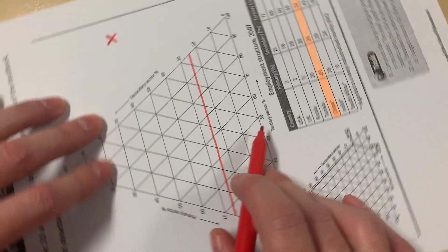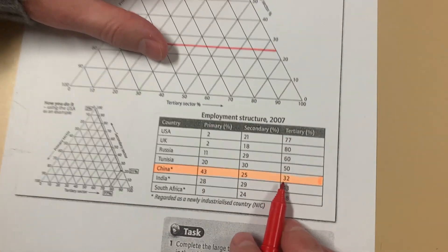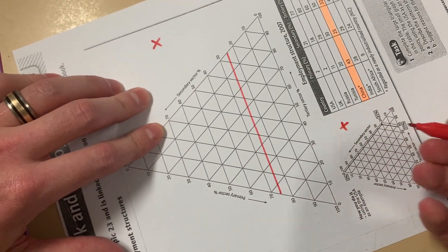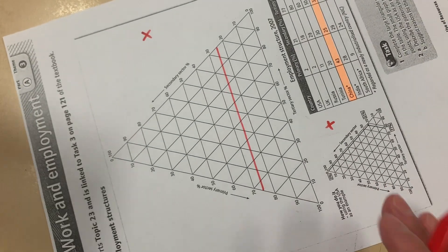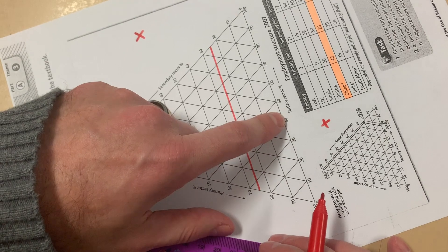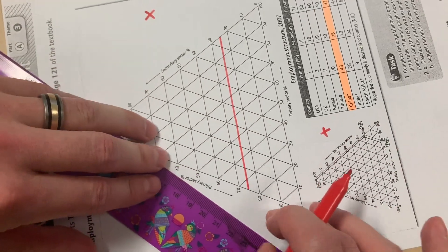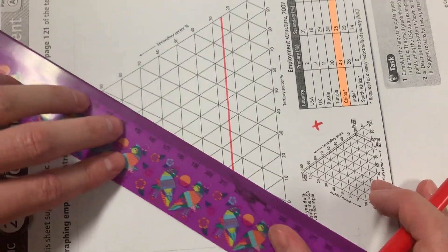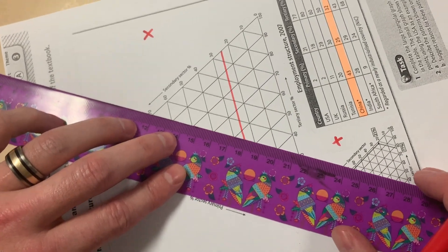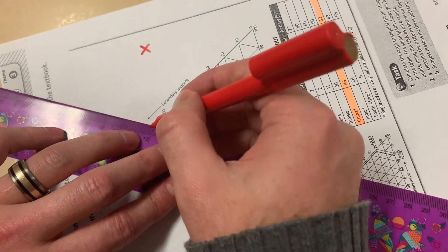Now we've got the tertiary sector. As we can see here, tertiary sector is 32%. So we turn around and again, it's just as easy as going right hand side horizontally across. We're always going horizontally. So 32 was where we needed to be. Here's 30. Here's 40. Bottom of the triangle is always 0. Top of the triangle is always 100. So we go 32 being there. And we draw another line.